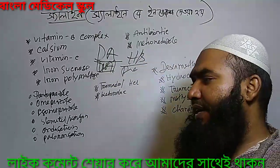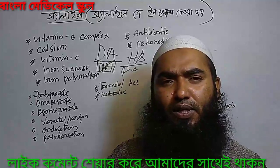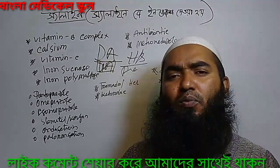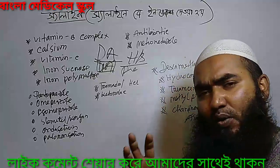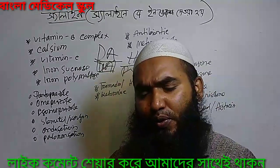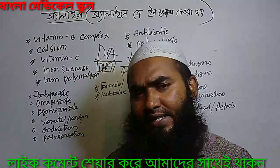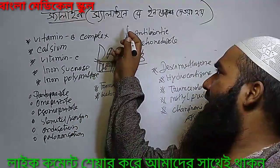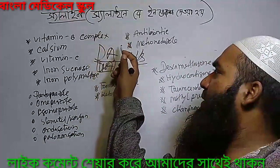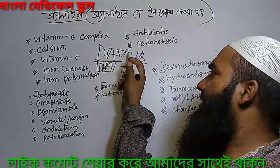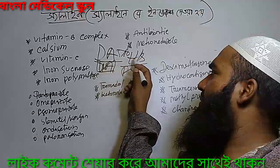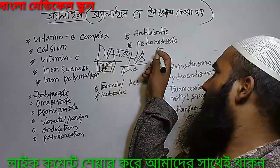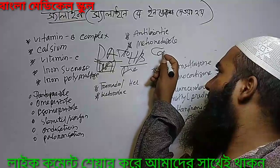If you look at this, it is called Iron Sucrose, Iron Polymaltose, which is the injection type. If you look at DA 5% or 10%, that is Hartmann's Solution, DNS — which is called Colour Saline.